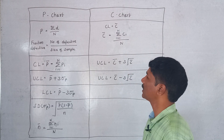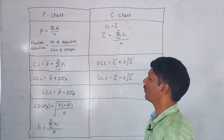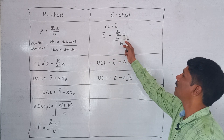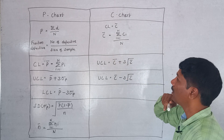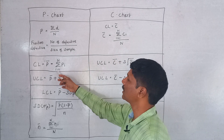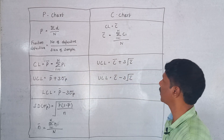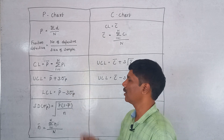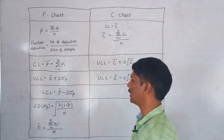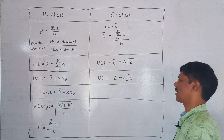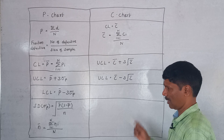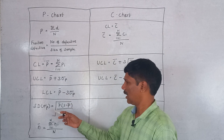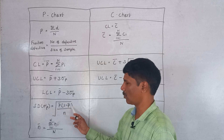For the P chart: P = sigma D by N, where P is the fraction defective, D is the number of defectives, and N is the sample size. P-bar = (sigma P_i from i=1 to N) / N. The upper control limit is P-bar + 3 * sigma_P; the lower control limit is P-bar − 3 * sigma_P. For the C chart: C-bar = (sum of C_i from i=1 to N) / N. The upper control limit is C-bar + 3 * sqrt(C-bar); the lower control limit is C-bar − 3 * sqrt(C-bar). Standard deviation sigma_P = sqrt(P-bar * (1 − P-bar) / N).